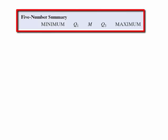The five-number summary simply is the minimum, Q1, the median, Q3, and the maximum.